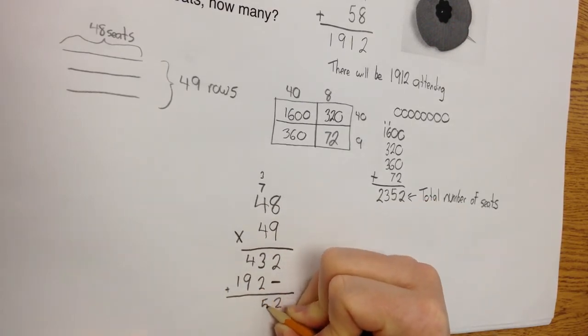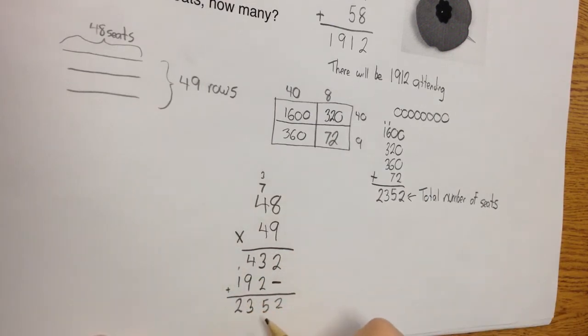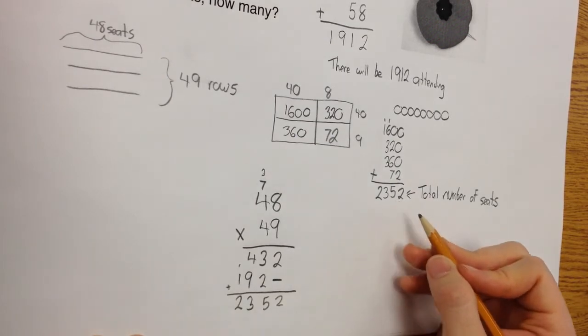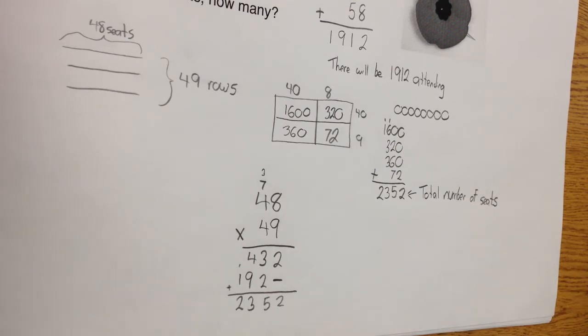And now I add these together. 2, 5, 3, 1, 2. I get 2,352, which is the same number I got over here. So my answer must be correct. But you know what? I really want that level 4 work. So I'm going to prove my way slightly another way.